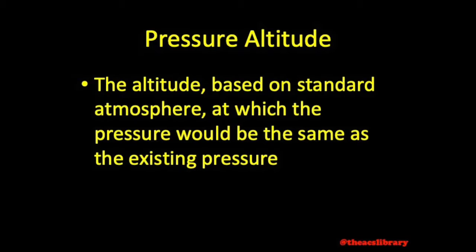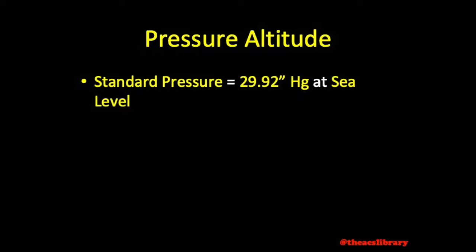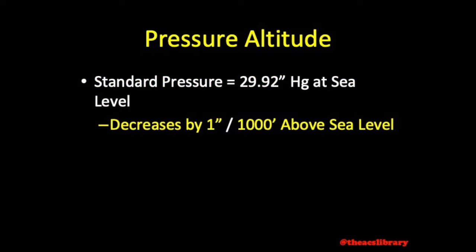Pressure altitude is defined as the altitude based on standard atmosphere at which the pressure would be the same as the existing pressure. Standard pressure at sea level is 29.92 inches of mercury and decreases by 1 inch per thousand feet above sea level.